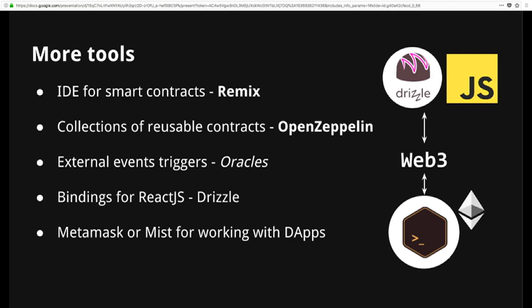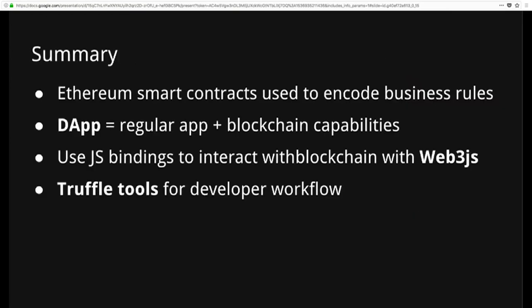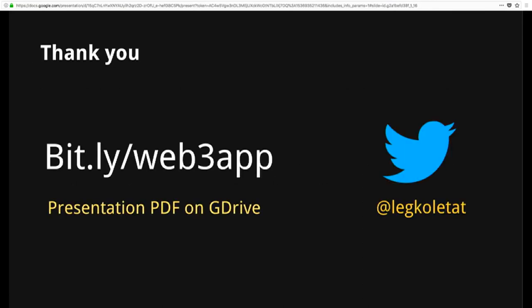If you want to dive more into actual smart contracts, there is a nice library called OpenZeppelin, which is something like Lodash in the JS world — it has a lot of basic stuff you can reuse and save a lot of time. Quick summary: we can write decentralized applications by adding functionality for interacting with the blockchain to normal apps. You can interact with a blockchain like Ethereum which has smart contracts — for that you can use Web3.js, a really cool library which has your back covered in all needed use cases. And there is a suite of tools called Truffle to get you up and running locally and develop for the blockchain. I hope you had some grasp of what it is — here is the link with the presentation. I'll be happy to answer questions now or during the day.